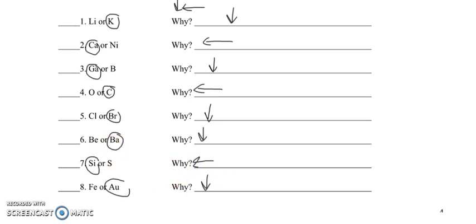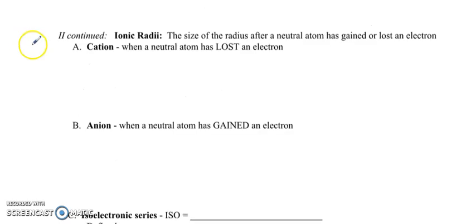We can talk more about that in class. So I think I'm going to stop here. We're going to look at what happens next when I change the size of the atom by adding or removing electrons to make the atom into an ion and make it more stable.